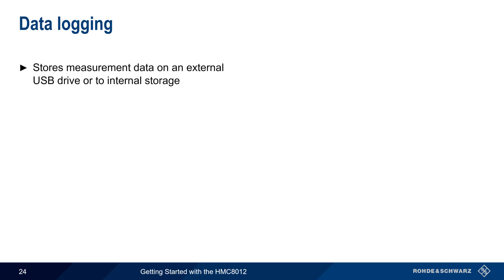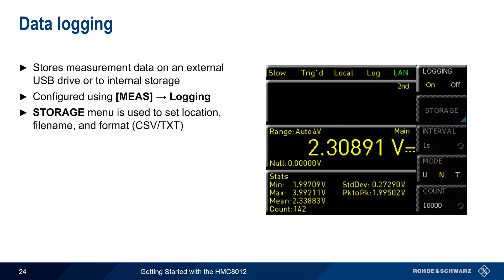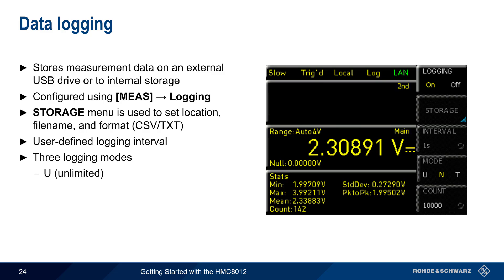The HMC 8012 can store or log measurement data to either an external USB drive or to its internal storage. This is configured by pressing the measure hard key and then selecting logging. The storage menu is where the logging location, file name, and format are specified, and the logging interval, or time between recorded values, is user definable. There are three logging modes: unlimited mode runs until the storage medium is full or logging is manually turned off; logging can also be configured for a defined number of samples; or it can run for a user-defined period of time entered in units of seconds.